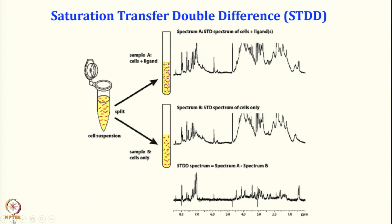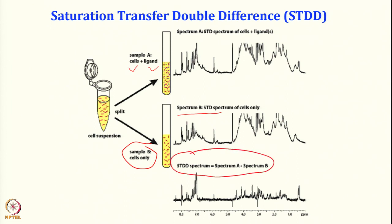Typically the experiment is done like this: we have a cell suspension split into two. Sample A will contain cells and ligand; Sample B will contain only cells. We record the spectrum of A, which has both the cell signal and the ligand signal. Spectrum D is the STD of cells only. We look at the effect of cell saturation on the ligand. Taking the difference of these two, we can see some signals getting illuminated — those are the binders that have bound.